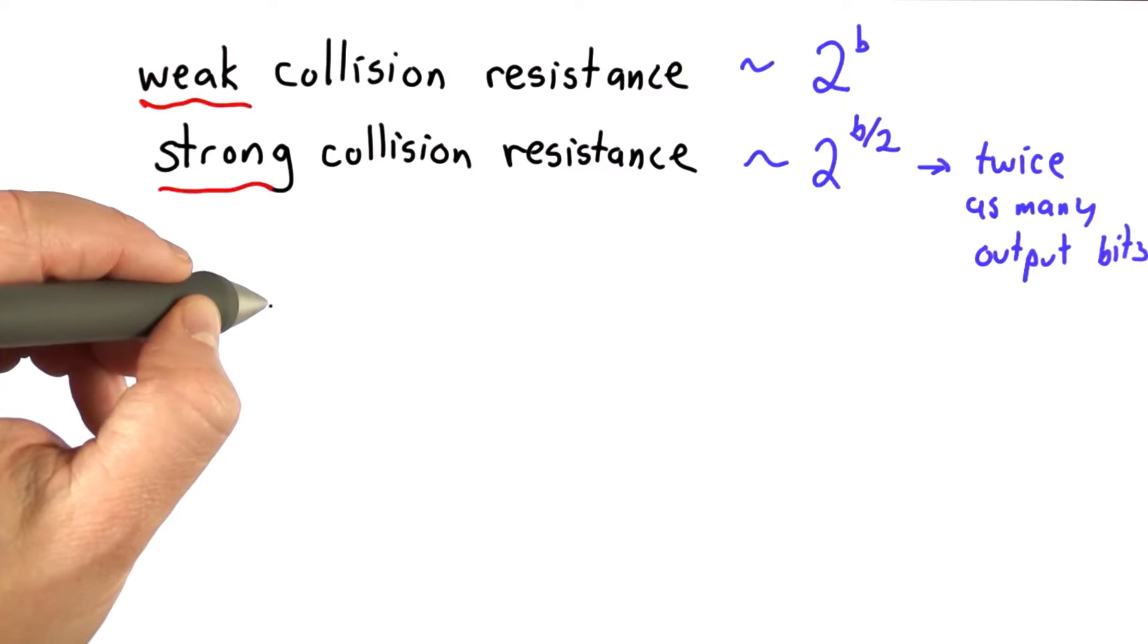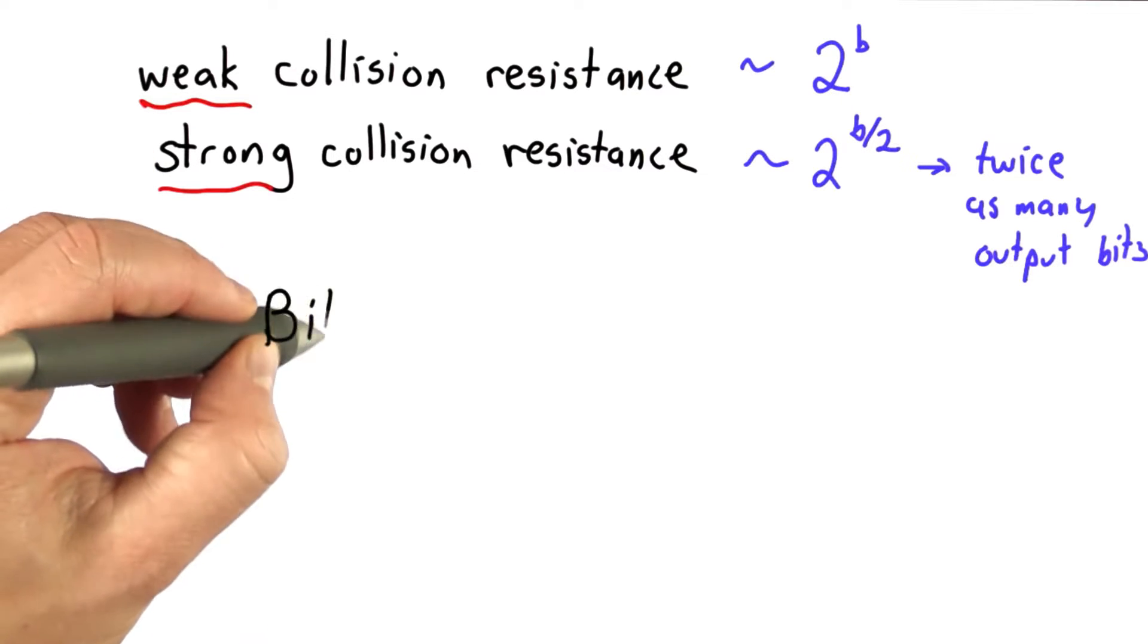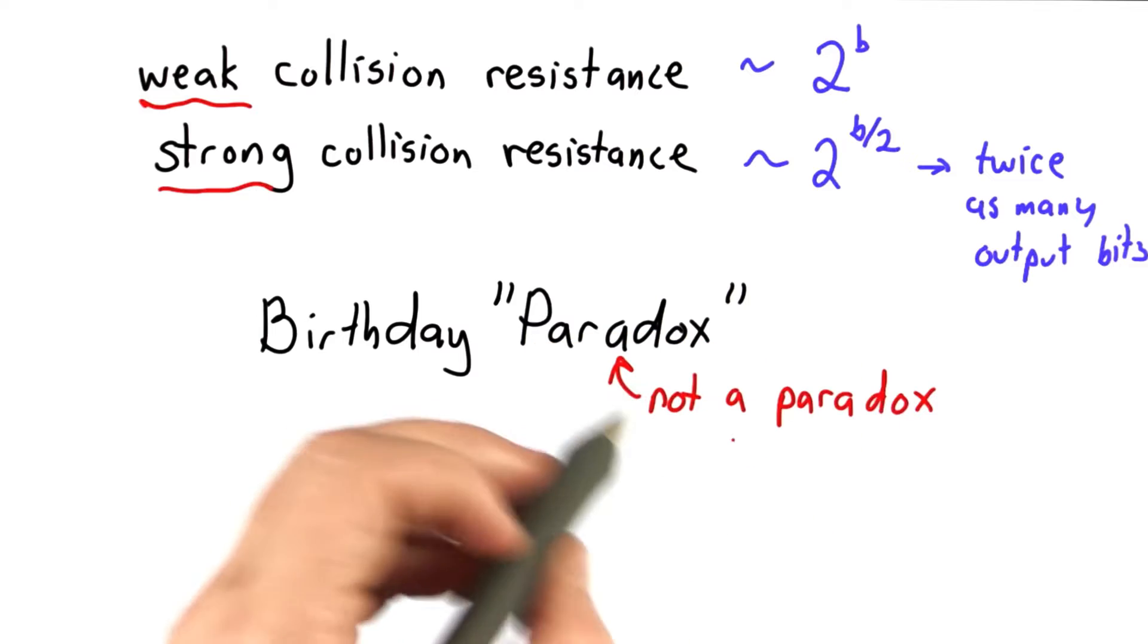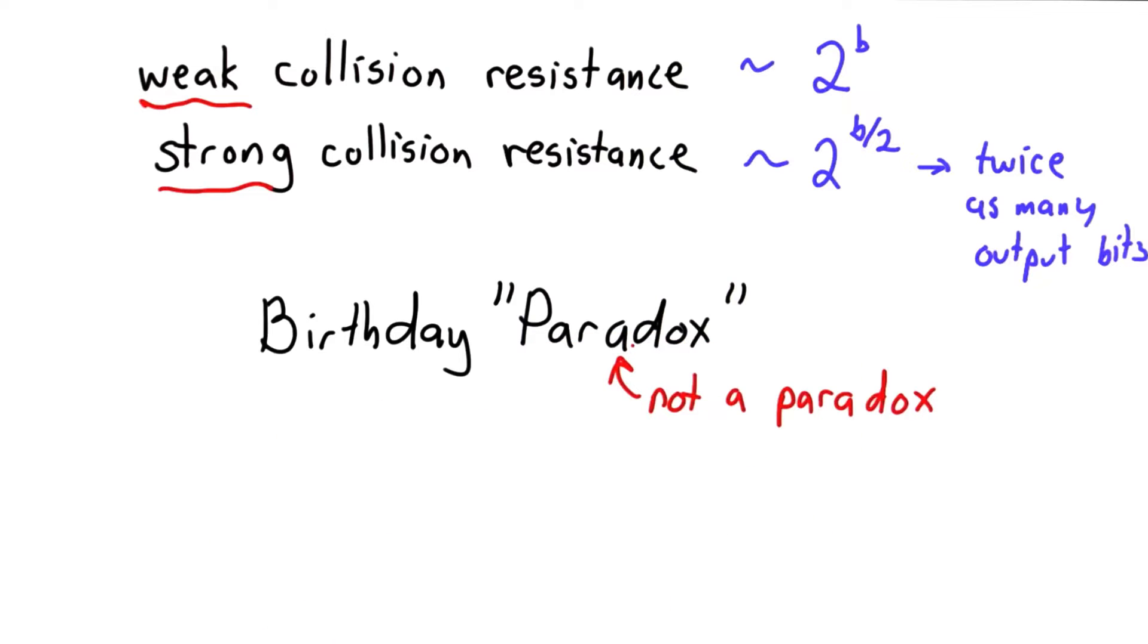The reason for this is because of what's known as the birthday paradox. It's called a paradox, but it's not really a paradox. It's a surprise to people who don't follow the mathematics on this, but there's nothing paradoxical about it. It's not like the Berry paradox that leads to a contradiction.